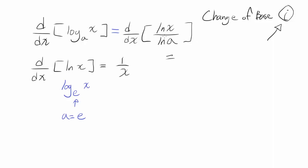So once we have this, 1 over natural log of a is constant. It does not have any x in it, so you can pull that out. So it's 1 over natural log of a times the derivative of natural log of x.